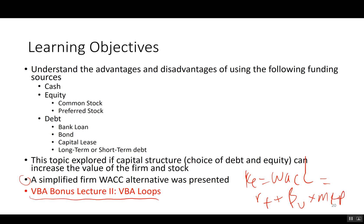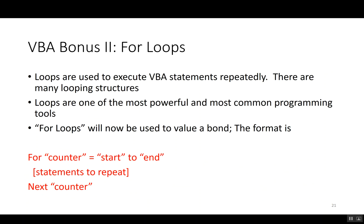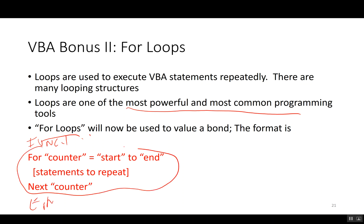Now a bonus lecture on VBA loops related to bonds. Loops are programming statements used in VBA to repeatedly execute operations — one of the most powerful and common programming tools. I'm going to show a for loop. A for loop always has this format: the word 'for', a counter variable equal to a start value 'to' an end value, statements to be repeated in the middle, and 'next counter' at the bottom.